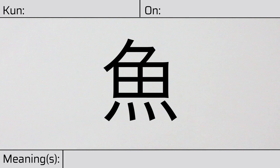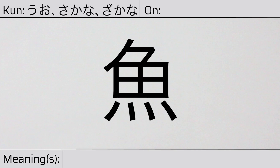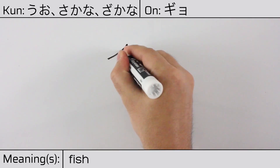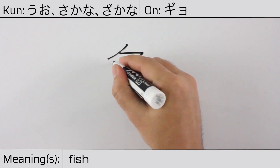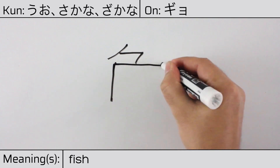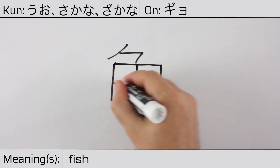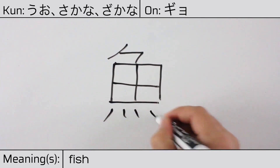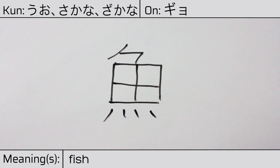Welcome to this lesson on Japanese kanji. Today, we'll be discussing this character. This kanji has kunyomi or Japanese readings of uo, sakana, or zakana, and it has an onyomi or Chinese reading of gyō. This character has the meaning fish. Here is the stroke order.